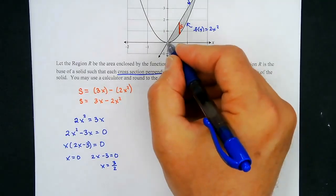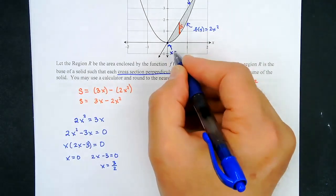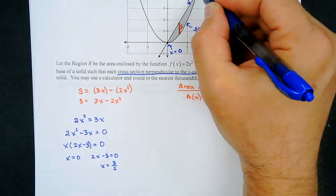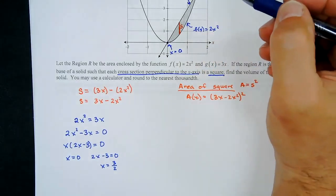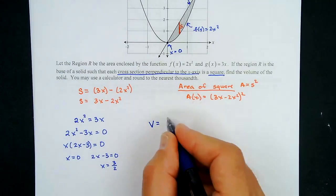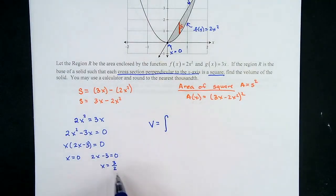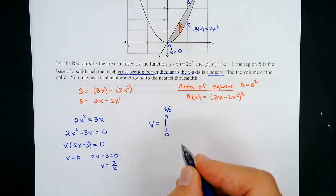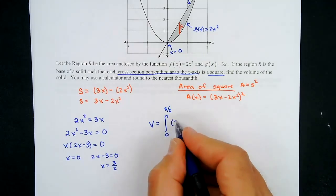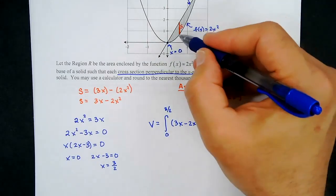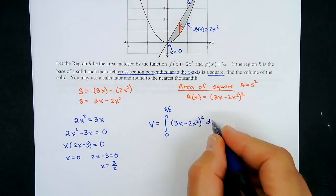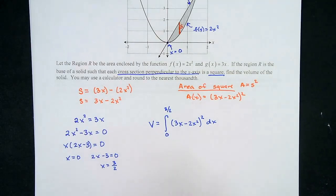The x-coordinate here is 0 and this x-coordinate is 3/2, which makes sense — it's right in the middle of 1 and 2. So the volume is the integral from 0 to 3/2 of (3x − 2x²)² dx, where the area formula is (3x − 2x²)² and the thickness of each square is dx.